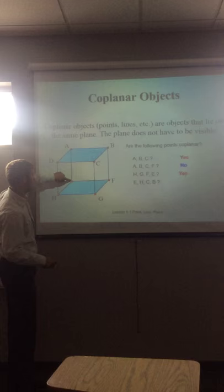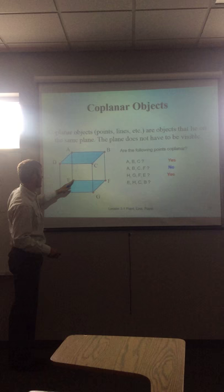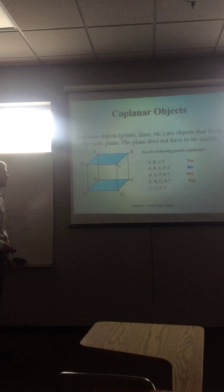E, H, C, and B. So you're looking E, H, C, and B. So you're talking about this diagonal that comes down. You can have a diagonal. So yes, those would be co-planar.